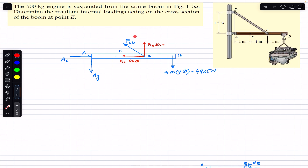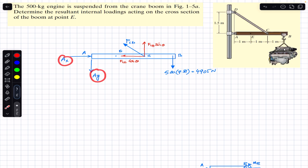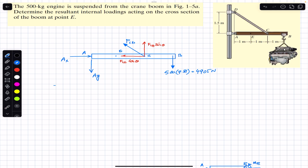To find FCD first, we apply the sum of moments about point A, since Ay and Ax both pass through point A and will not produce moments there. This eliminates the two unknown support reactions, leaving us to solve for FCD directly. The sum of moments about A must equal zero, with counterclockwise moments taken as positive.